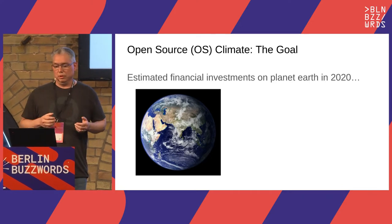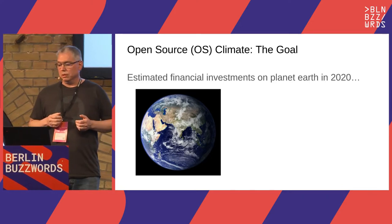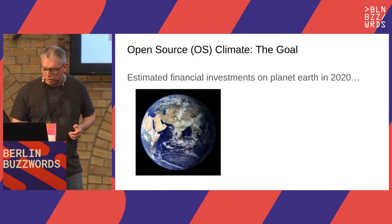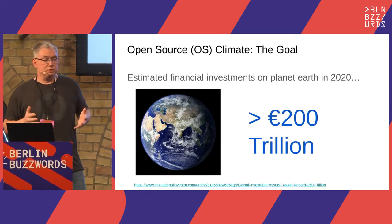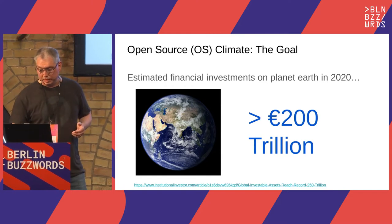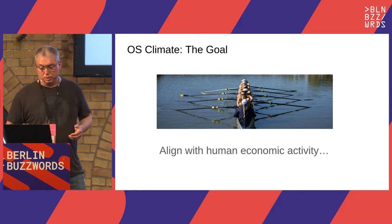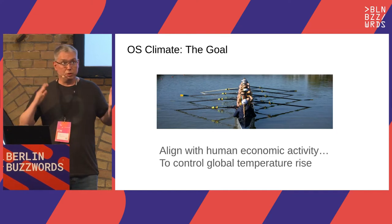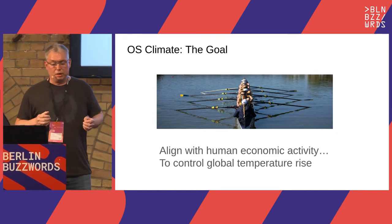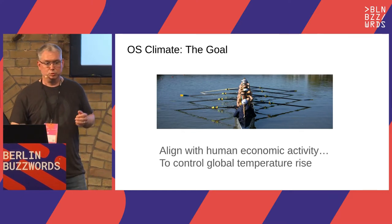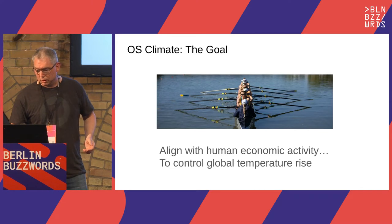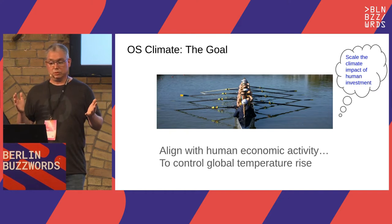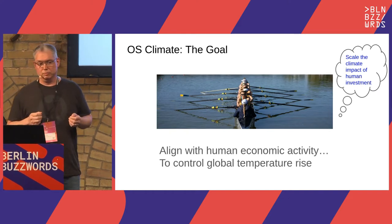So, what's the goal of OS Climate? In 2020, they estimated that the entire scope of financial investments on planet Earth were in excess of 200 trillion euros. The goal is to align all that human activity — get everybody rolling in the same direction — to try and control global temperature rise. We're swinging for the fence. And so you'll notice that already we're effectively talking about scale: we're trying to actually scale the positive climate impact of human investment activity.